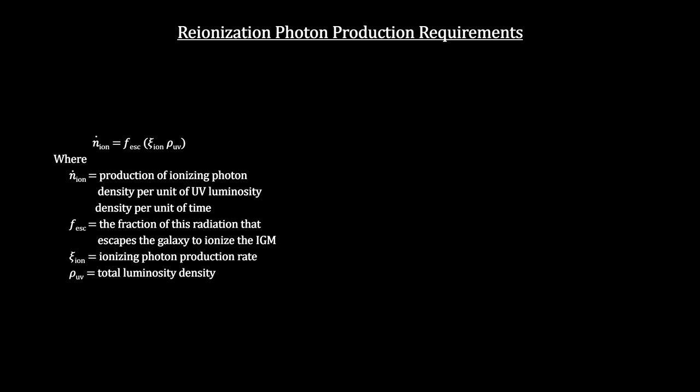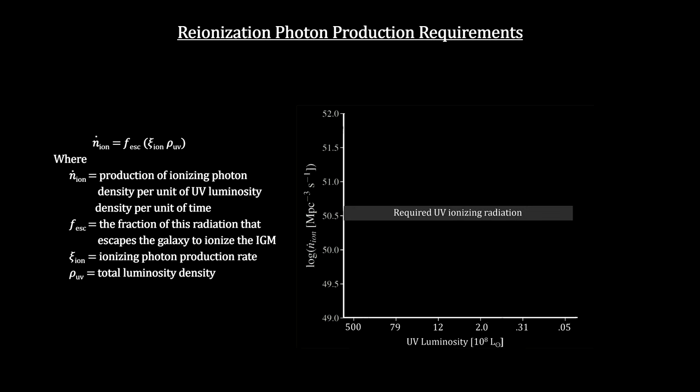The team found that these faint galaxies are immense producers of ionizing radiation, at levels that are four times larger than what was previously assumed. The gray shaded region is the threshold required to maintain the universe ionized at z equals 7. The blue curve represents the case when the escape fraction is just 5%. And the red vertical line shows the limit probed by this work.